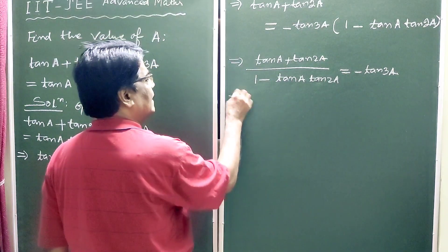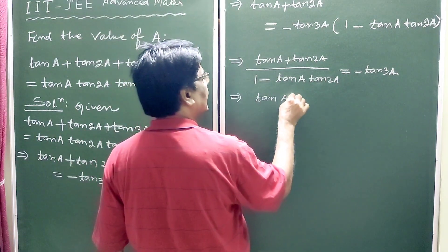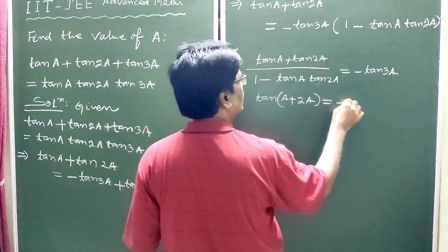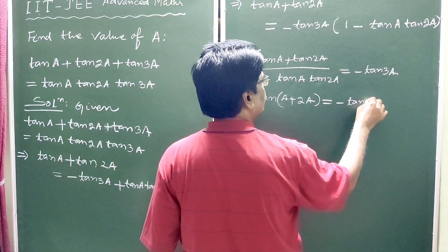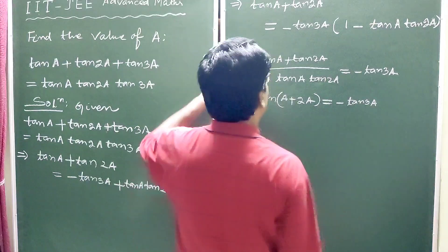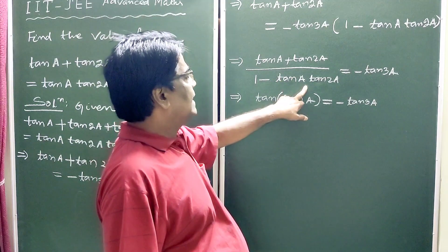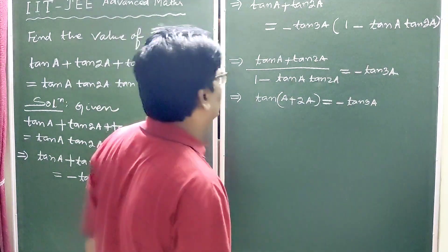This implies tan A plus tan 2A by 1 minus tan A tan 2A equals tan of A plus 2A.